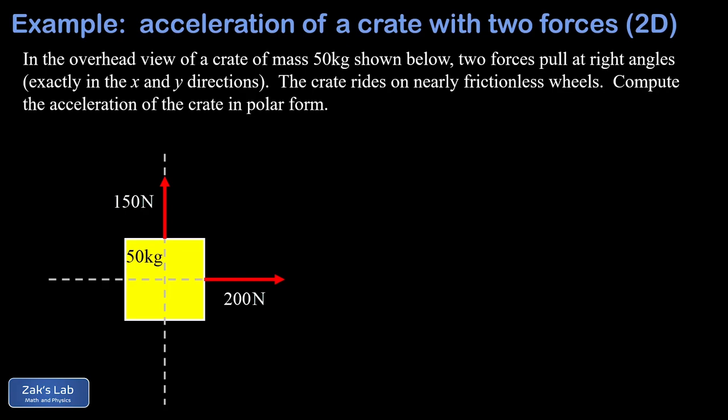Just to clarify, this is an overhead view of the crate, so the crate is moving around on a horizontal surface and we're looking down on it from above. And what we're trying to find here is the acceleration of the crate in polar form. Now, polar form means we want the magnitude of the acceleration and the direction given as an angle.